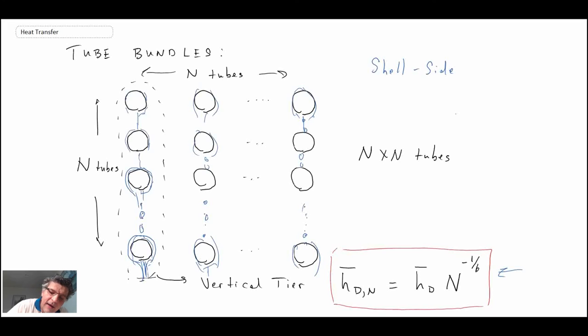...where you have a larger cylindrical object. And that is essentially the shell. And then on the inside, you have all of these tubes. And so in the case of shell side condensation, that means the condensation is taking place outside of the tubes. And it would be dripping as we have here.